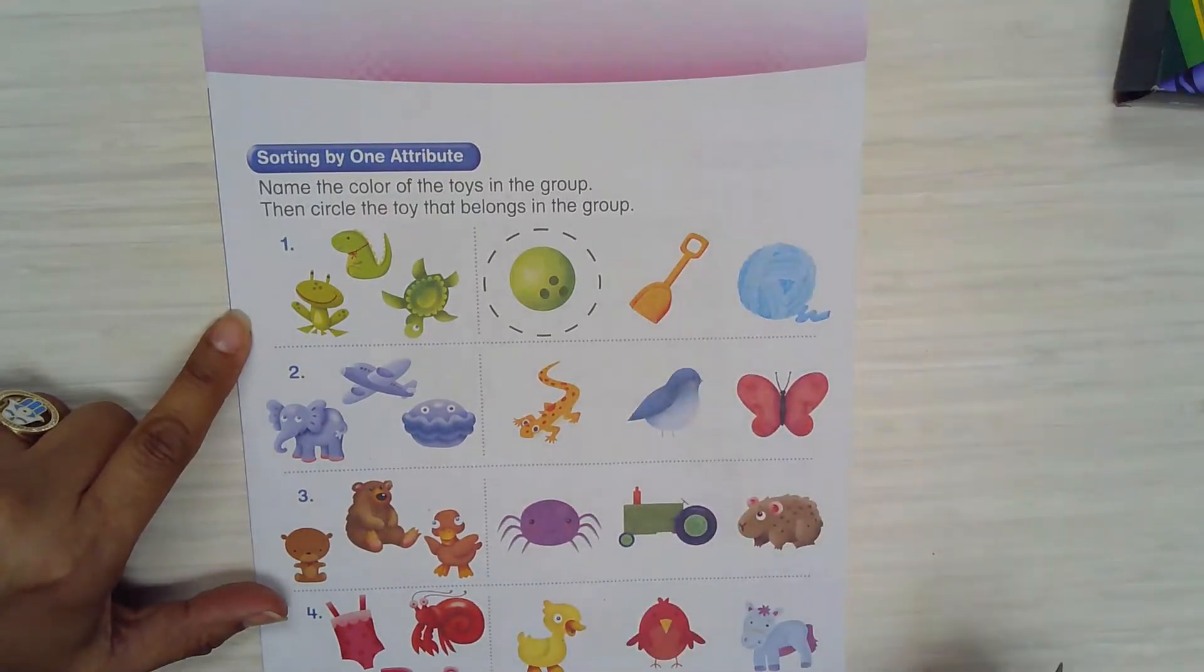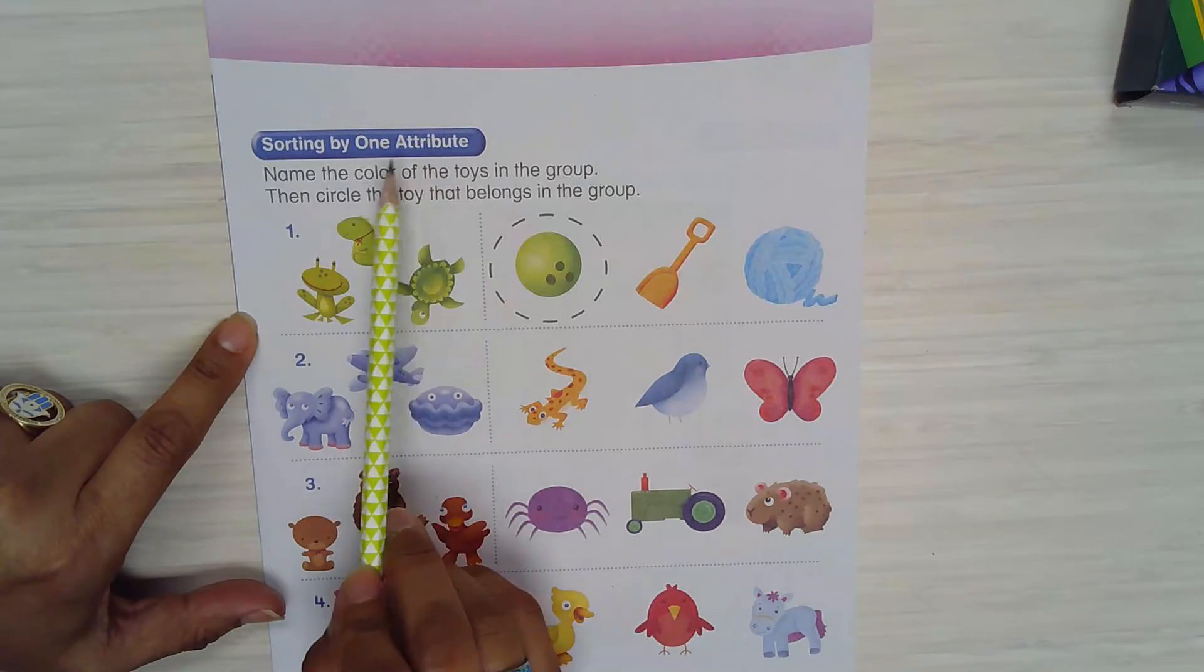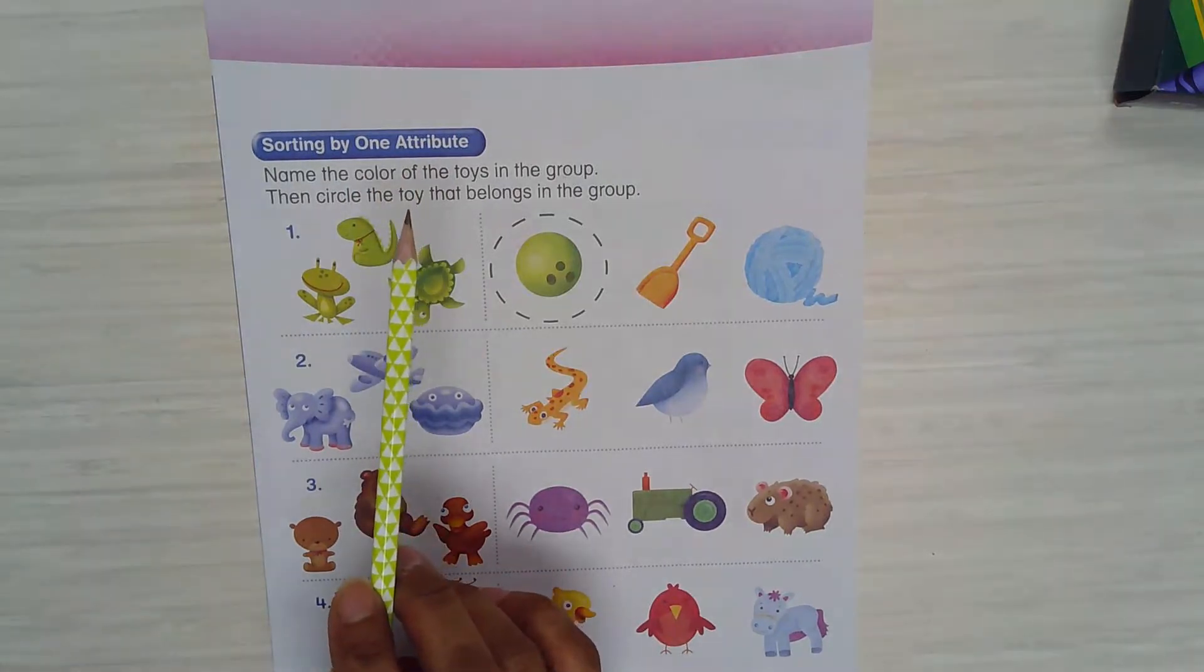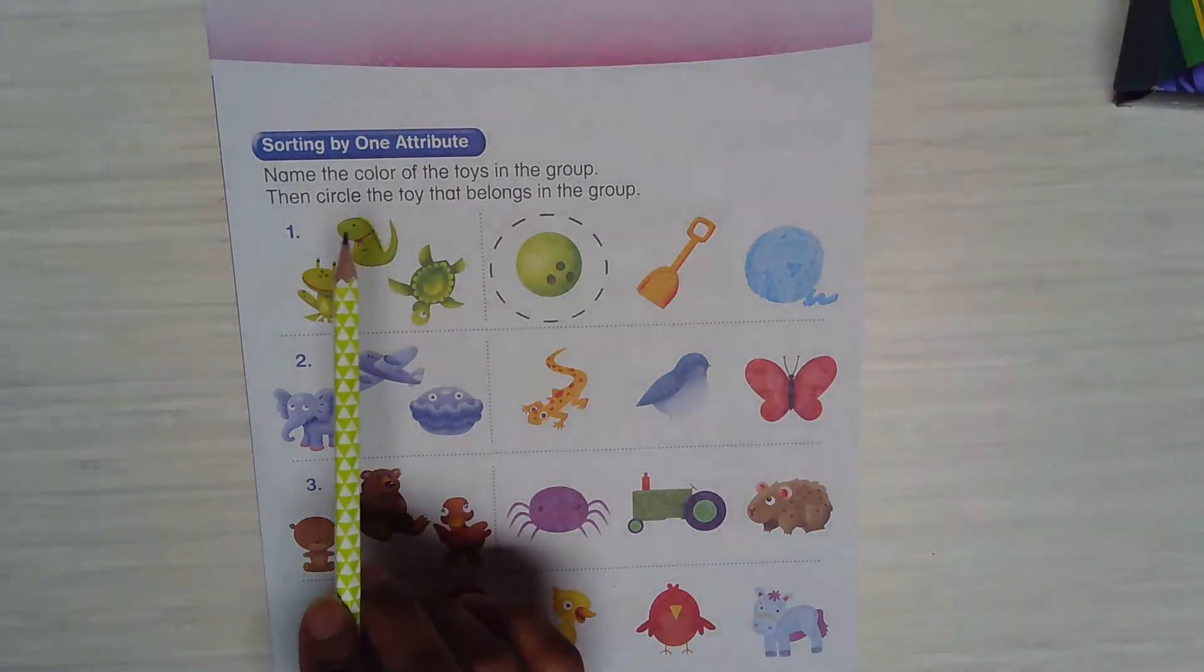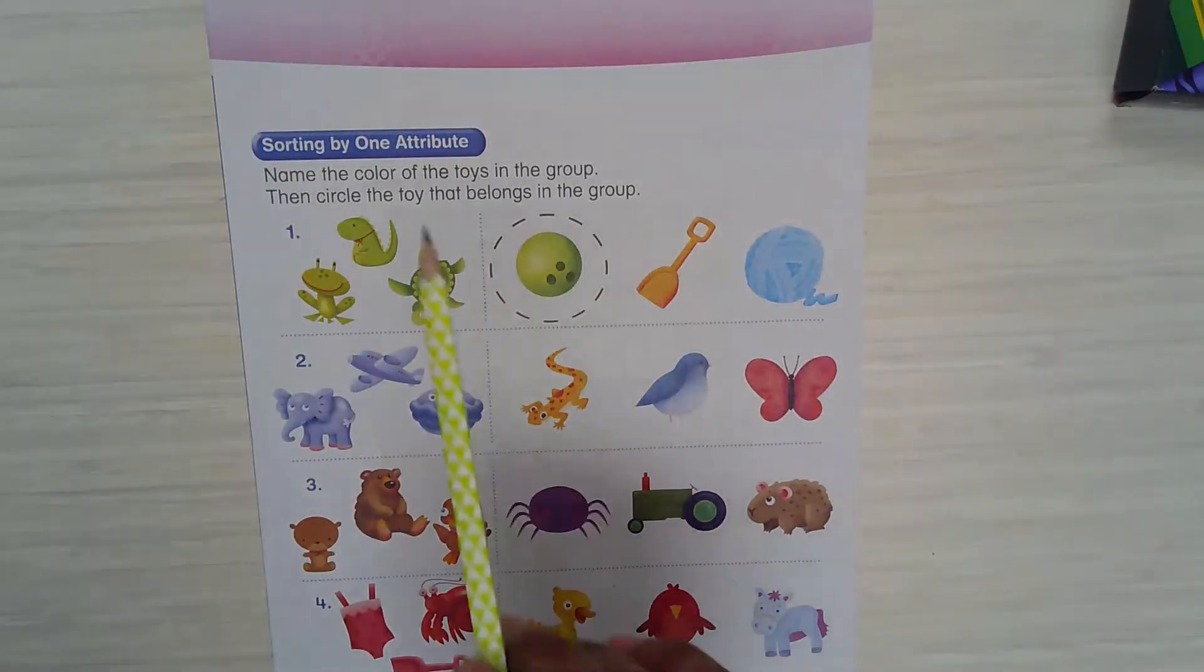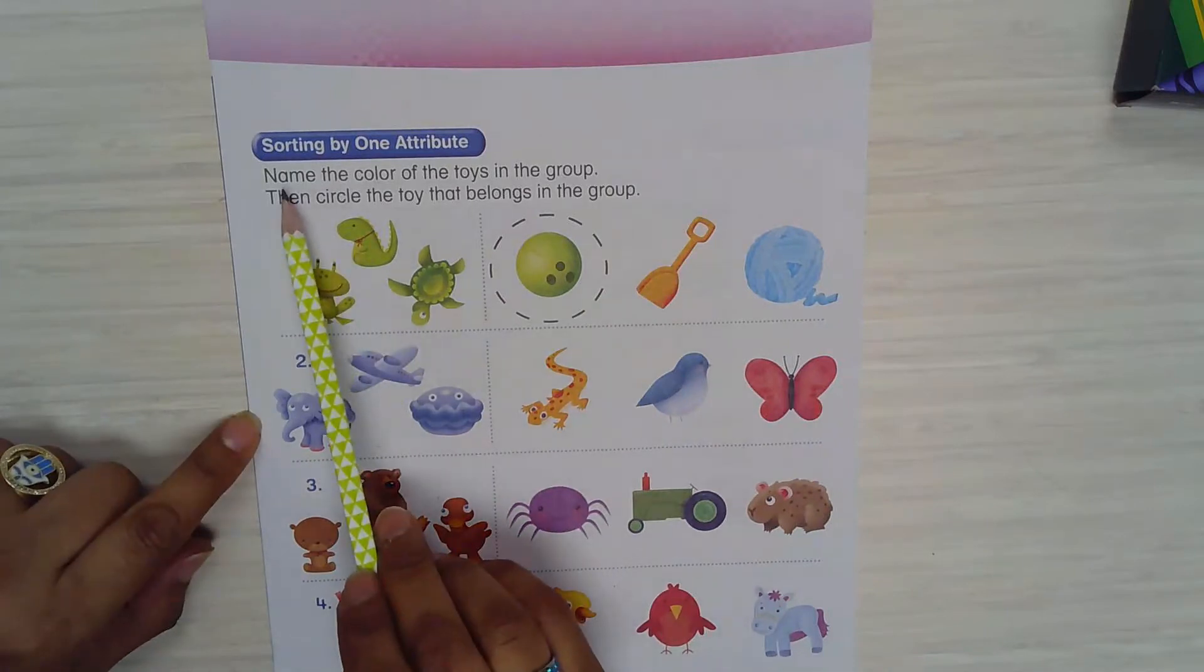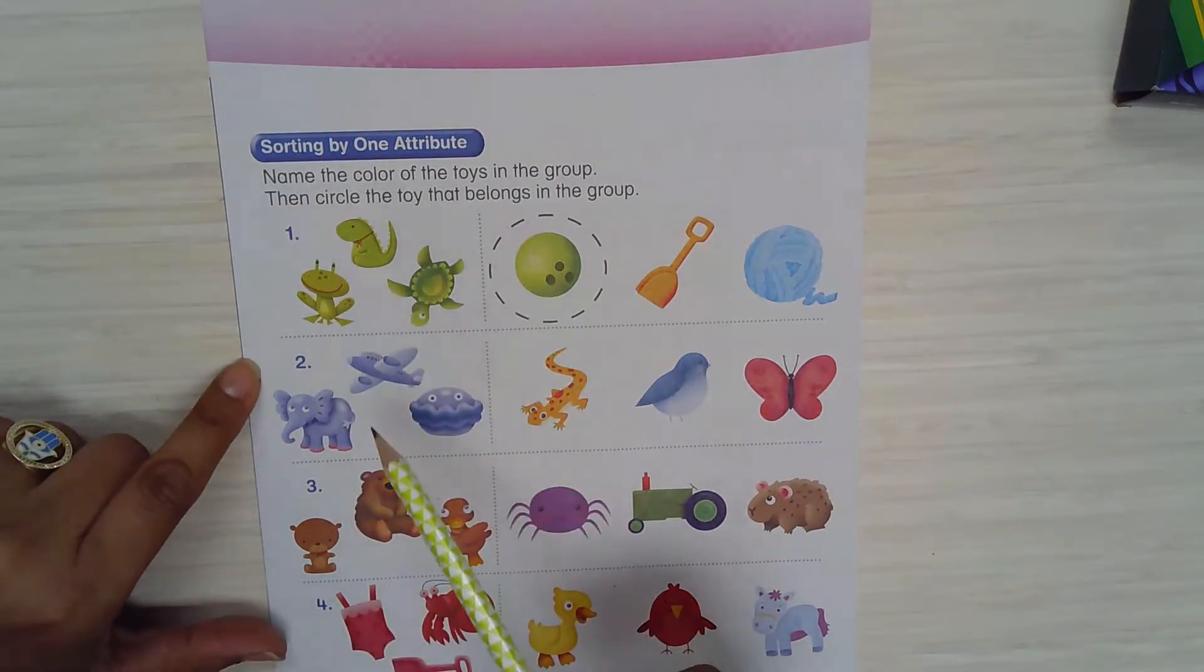Let's start. Starting by one attribute. Attribute is like features, something that's common between the objects that you're going to sort. For example, for this lesson or for this activity, we'll be sorting the objects by colors.